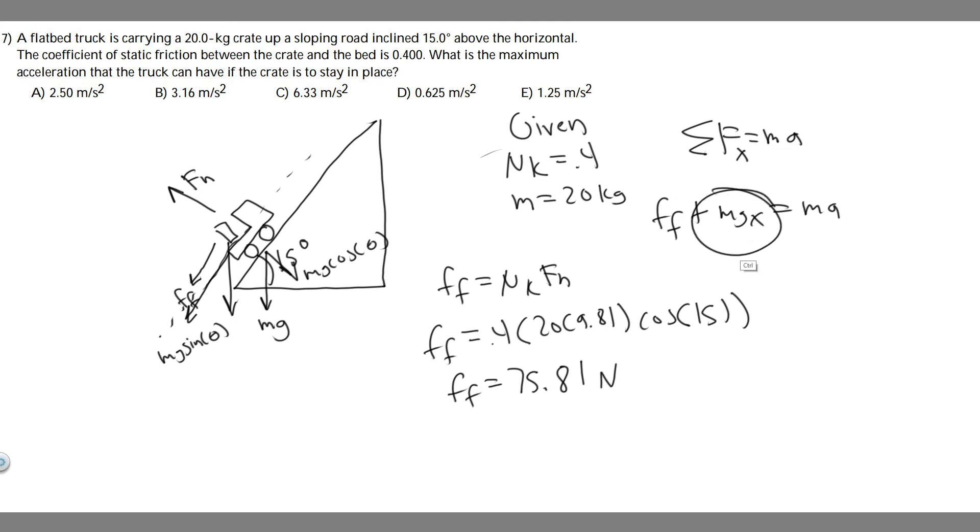Now we need to find mgx. And as I said, this is the weight force in the x direction, which is this right here, mg times the sine of theta. So mgx is equal to the mass, which is 20 of the crate, times g, which is 9.81. And then we multiply it by the sine of theta, which is the incline, and it's 15 degrees. So 20 times 9.81 times the sine of 15.